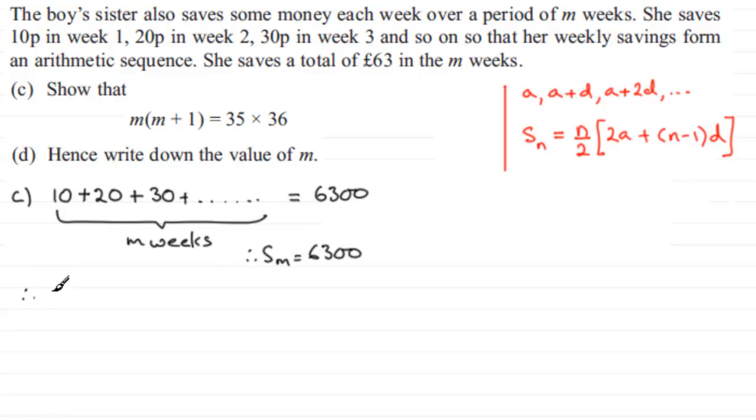So therefore, what we have is (m/2) multiplied by [2 times the first term, 2 times 10, plus (m-1) times the common difference, which is 10, because it's going up in steps of 10], and that equals 6,300.